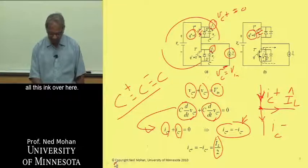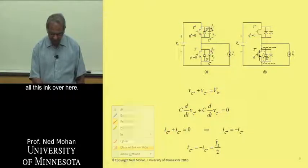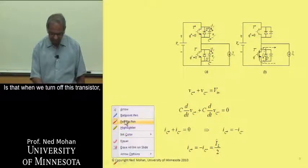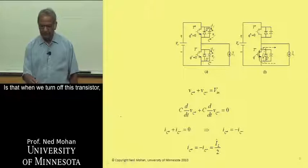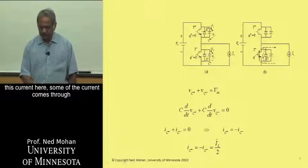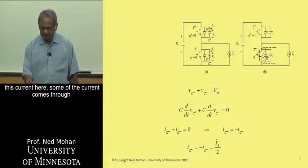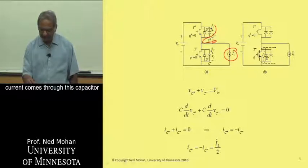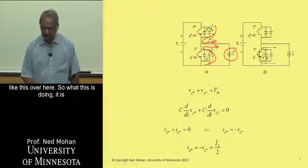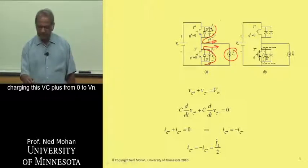So what is going on in this circuit, if I may erase all this ink over here, is that when we turn off this transistor, this current here flows, some of the current comes through this capacitor like this, and some of the current comes through this capacitor like this over here.